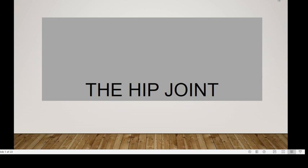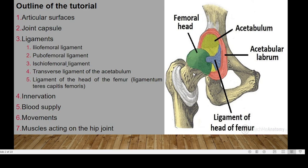Hello and welcome to this session. Today we are going to look at the hip joint — specifically the contents of the hip joint. This is the outline for the tutorial. We'll be looking at the articular surfaces, followed by the joint capsule, ligaments, innervation, blood supply, movements, and muscles that act on the hip joint.